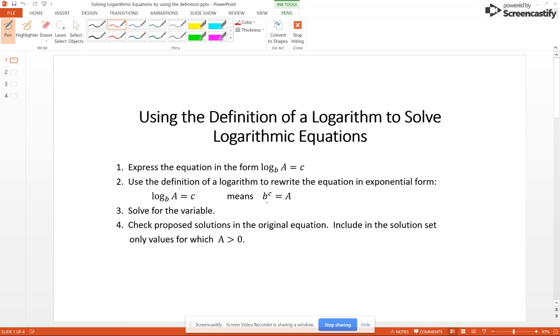Once you have rewritten this, you should be able to solve for the variable, but logarithms have domain issues, so you must check the proposed solution in the original equation. You need to include the solution set only the values which – the A is greater than 0. So what you were logging has to be non-negative and non-zero.